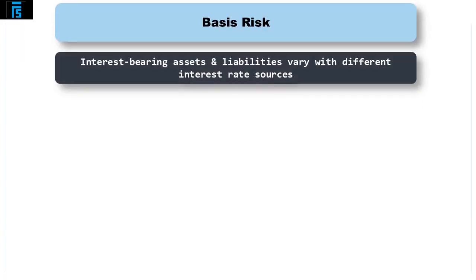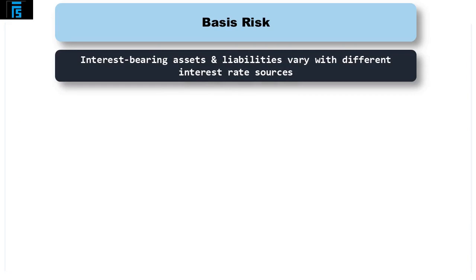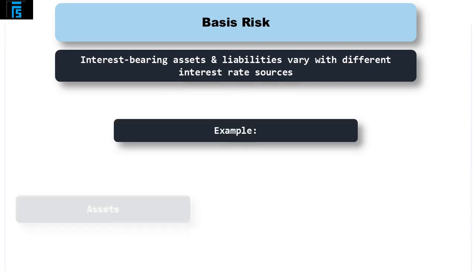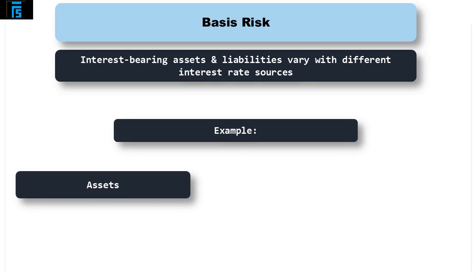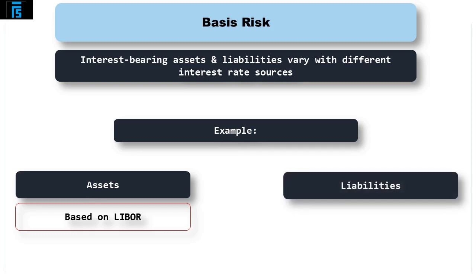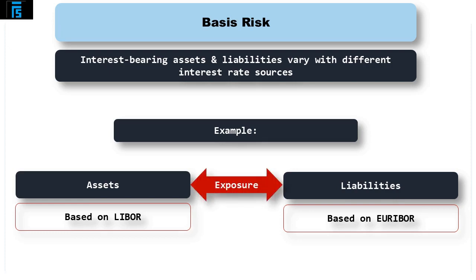Basis risk occurs when interest-bearing assets and liabilities vary with reference to a different interest rate source. For example, interest rates on savings that are based on LIBOR, the London Interbank Offered Rate, may move at different times or by different amounts to liabilities that may be based on Euribor, the European equivalent of LIBOR. Again, this means that company profits will be exposed as the interest rates move at different times or by different amounts.